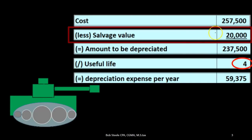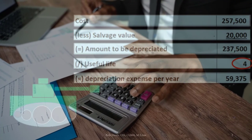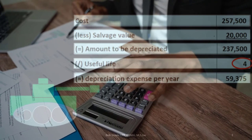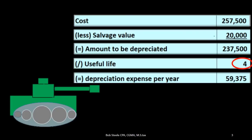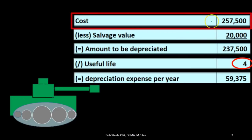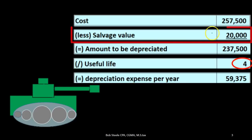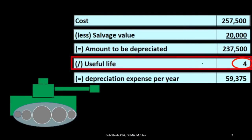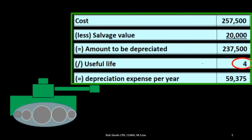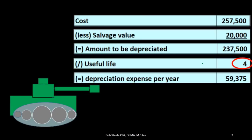The other thing that could change in this particular estimate is the salvage value. The salvage value — the amount that we believe we could sell the equipment for at the end of the useful life — maybe we think that's going to be more or less. That, too, could change our estimate. Obviously, the cost will not change, and that's something that's not an estimate — that's concrete. The salvage value and the useful life are estimates that could change at a future point in time. We're going to make our best guess at the point in time that we purchased the equipment.